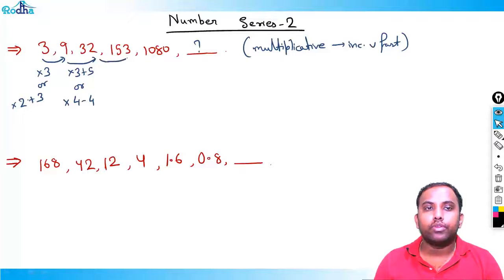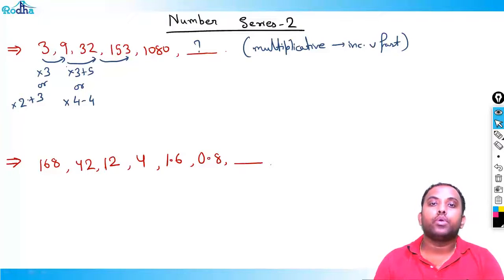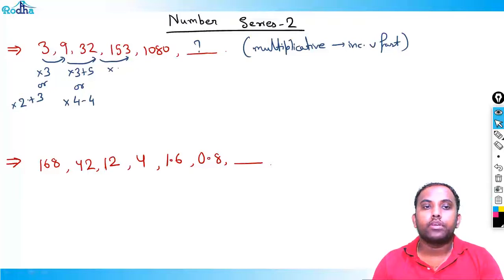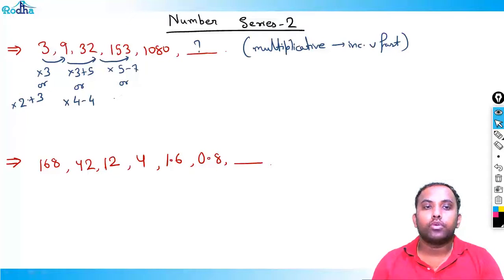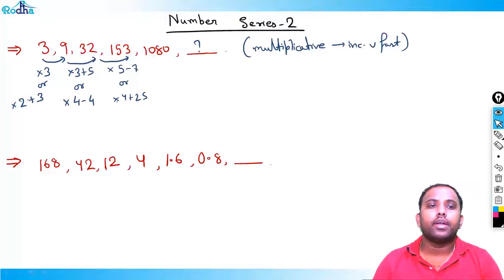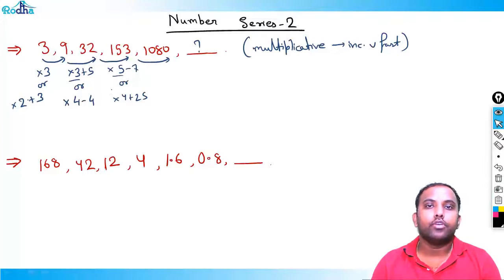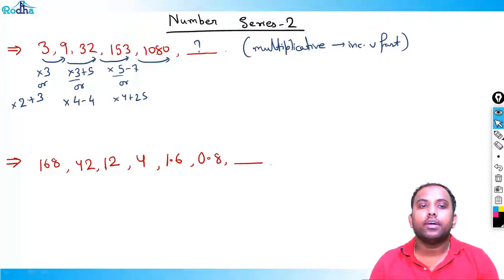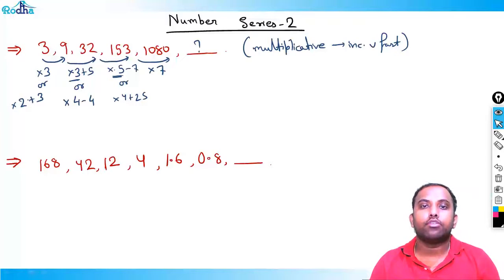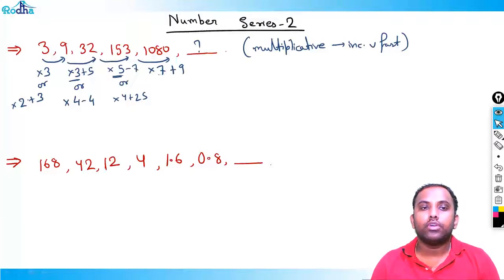Now from 32 to 153: the nearest multiple is 32×5=160, so it is ×5 minus 7. You can also see it as ×4 plus 25. By now you should see the pattern: ×3+5, ×5−7. Then 153 to 1080: ×7, since 153×7=1071, plus 9 is 1080. So it is ×7+9. The pattern is ×3+5, ×5−7, ×7+9.